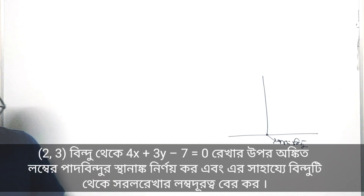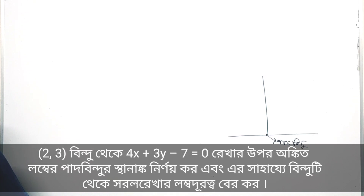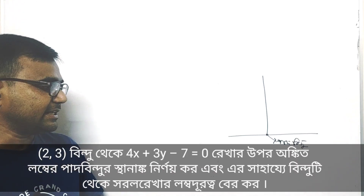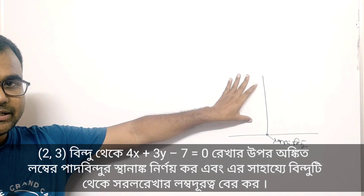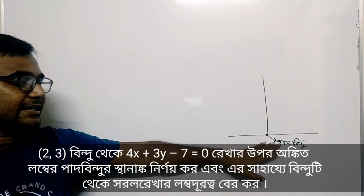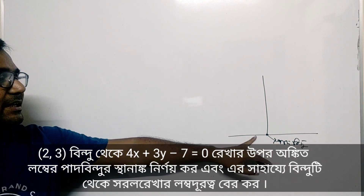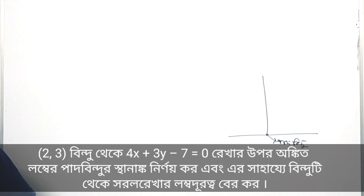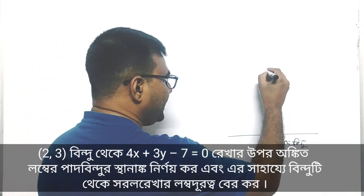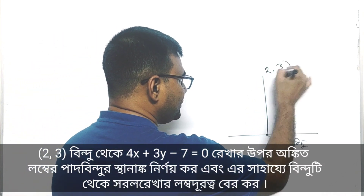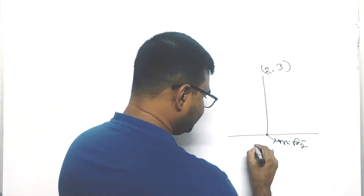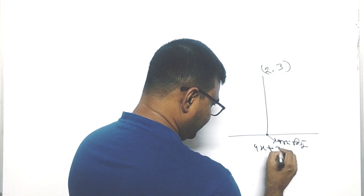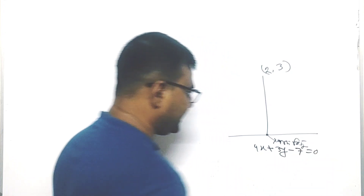Let's check out the math problem. We have the line 4x + 3y - 7 = 0. We will call this the given line. The second point given is on the line 4x + 3y - 7 = 0; this is the second point we need to work with.